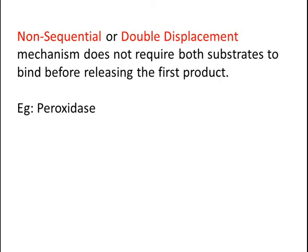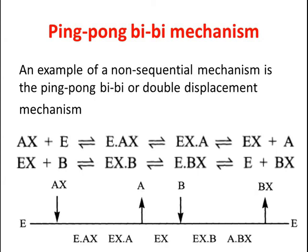The very first reaction is the ping-pong bi-bi mechanism. This is an example of a non-sequential mechanism or double displacement mechanism.